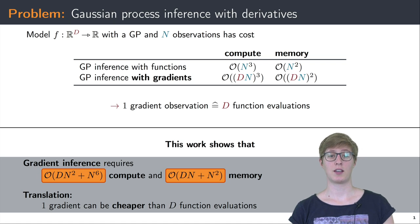GPs can also be conditioned on gradient observations. They increase the computational load to cubic in evaluations and dimensions and quadratic in both d and n for storage. In other words, one gradient evaluation is equivalent to d function evaluations in terms of hardware constraints, but it only provides information about the function at a single location.